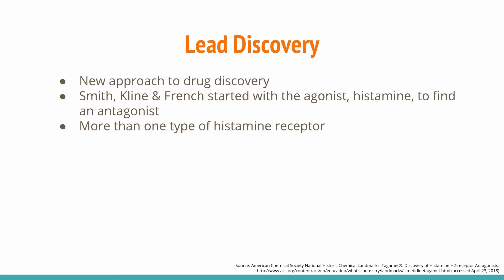The lead discovery of H2 antagonists was significant because the researchers used a new approach to drug discovery. In the past, they would start with natural products such as a plant extract with biological activity and would then make many similar compounds and test them for effectiveness. But Smith, Klein, and French — which later became GlaxoSmithKline — used a new model and started with the histamine molecule itself, which stimulates acid secretion when it binds to the receptor. They wanted to find a compound that would compete with histamine by binding to the receptor but would block instead of cause acid secretion.